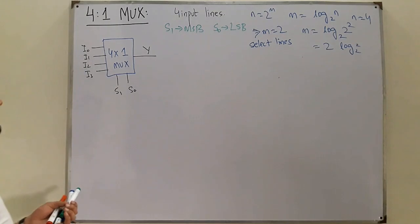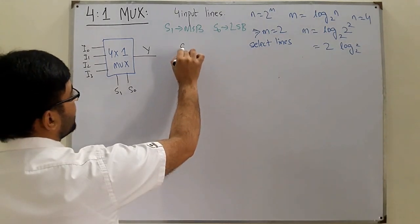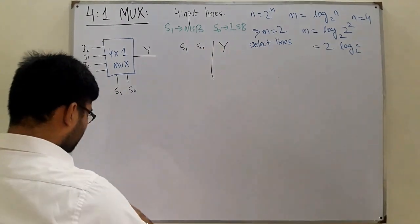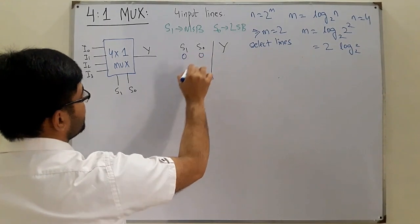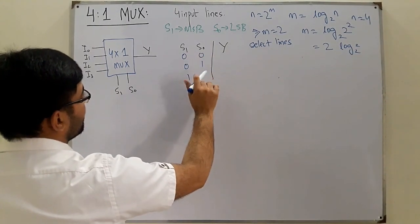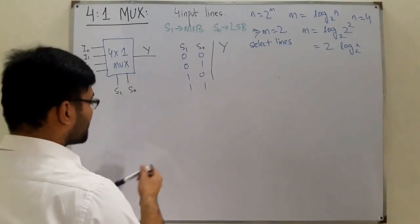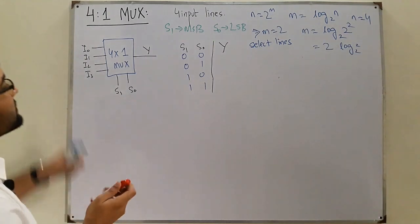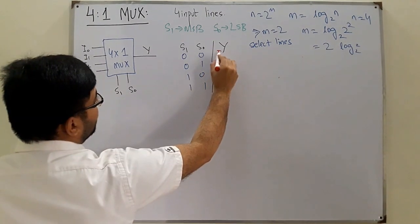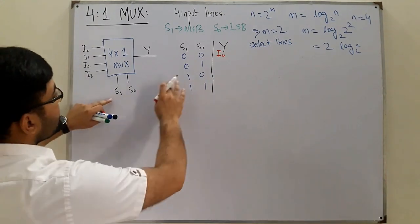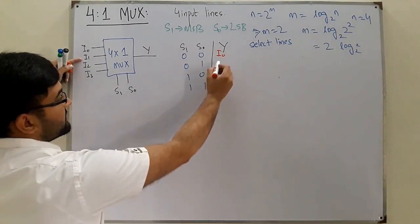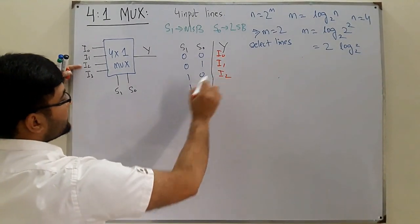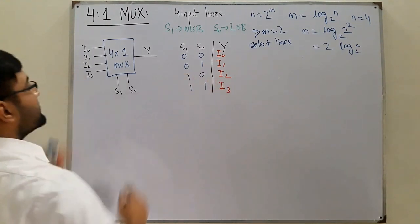Now drawing the truth table — depending on s1 and s0, the value of y is selected. The combinations are: 00 selects i0, 01 selects i1, 10 selects i2, and 11 selects i3.